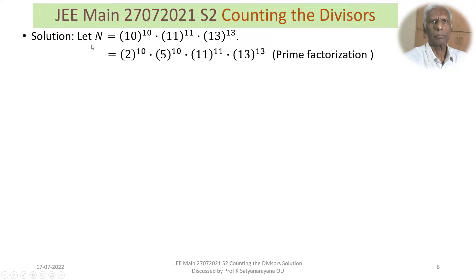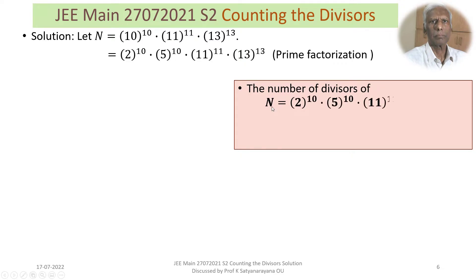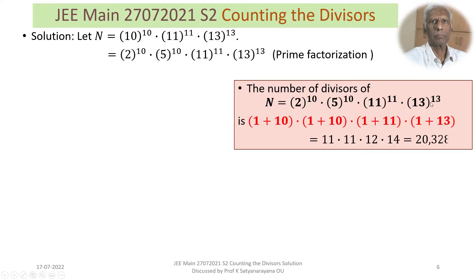This is the prime factorization of N. We know how to count the total number of divisors from the prime factorization. The total number of divisors is (1+10) × (1+10) × (1+11) × (1+13), which simplifies to 11 × 11 × 12 × 14 = 20,328. This is the total number of divisors of this number.